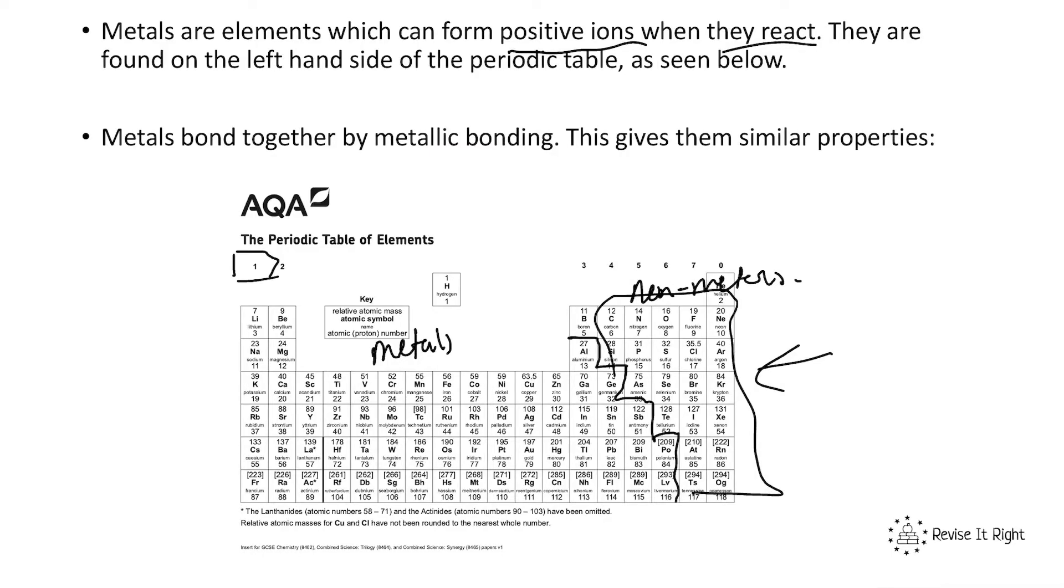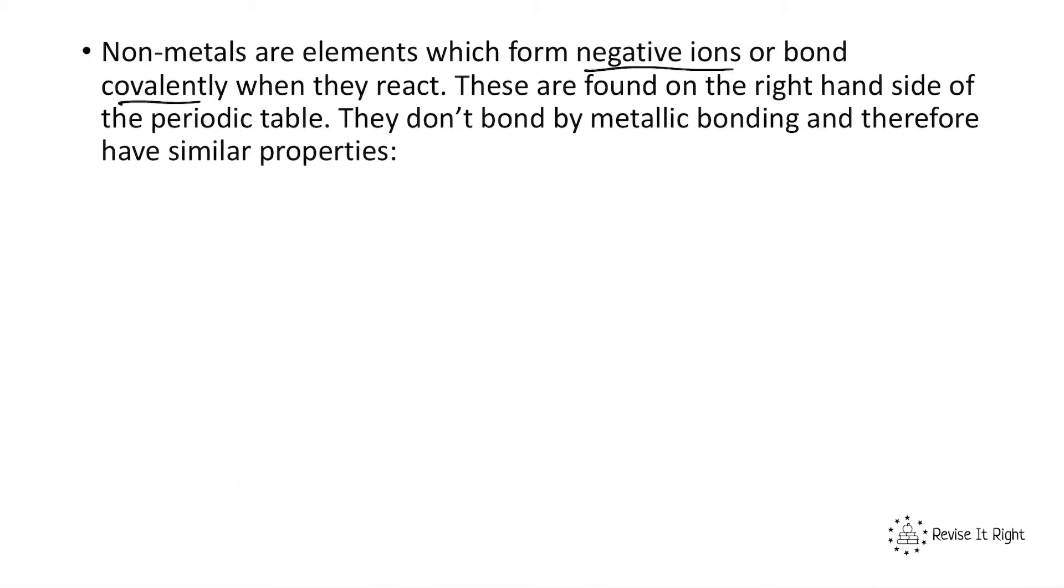Metals have similar properties. They are good conductors of both heat and electricity. They have high boiling points, they're strong, and they're malleable—meaning they can be bent or hammered into different shapes.